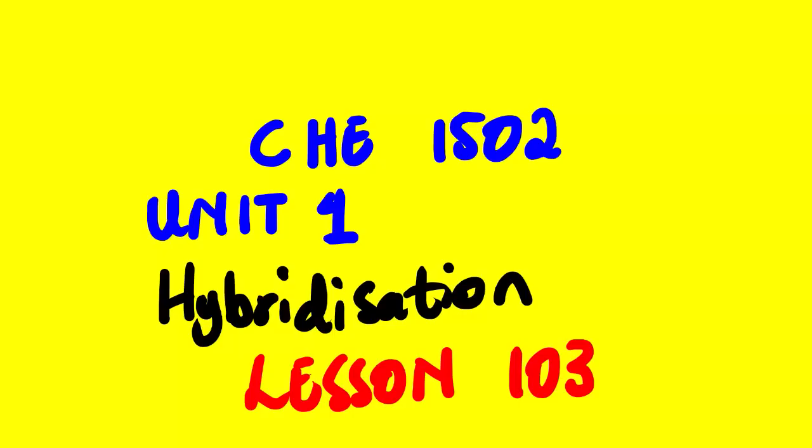Our topic for today will be looking at Chemistry 1502, that is General Chemistry 1B, also known as Organic Chemistry. The topic that you are busy with is under Unit 1 of your study guide. The topic for today is hybridization, Lesson 103, building from the basics of Lesson 101. Let us start.